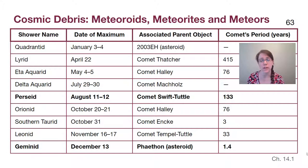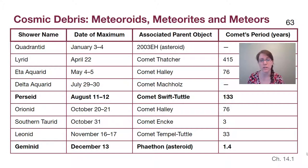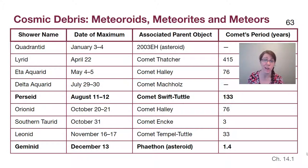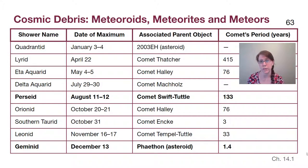The Geminids happen in December — in Michigan, it's super cold — but they are also a very strong meteor shower at their peak and always tend to occur around the same time of year. Please be aware it may be a day before or after because our year is not a perfect 365 days, but it's always roughly around that time.